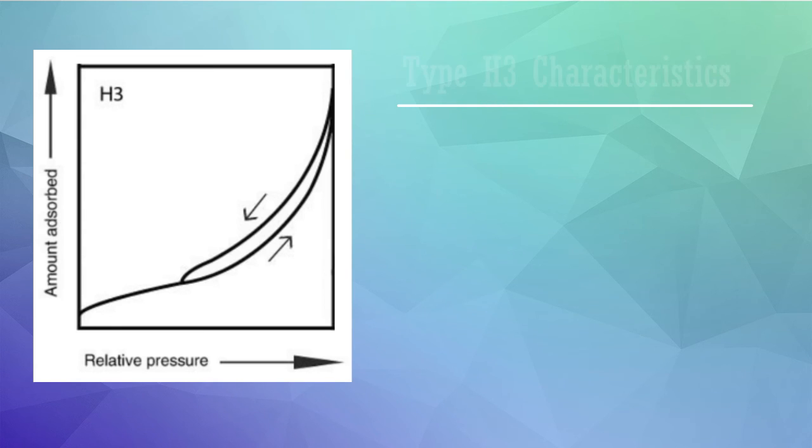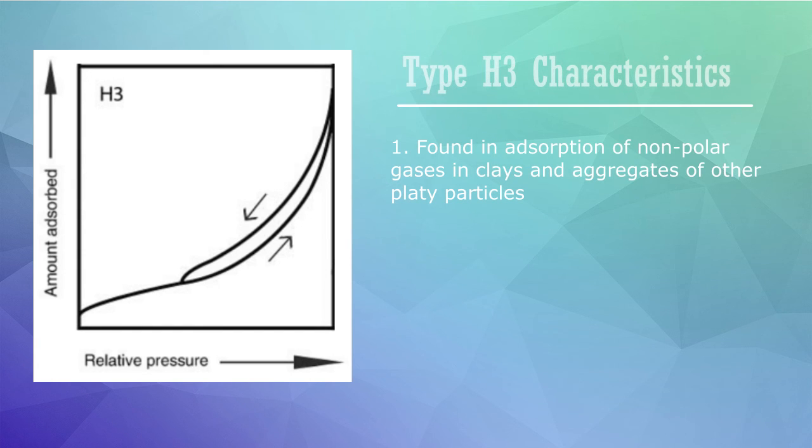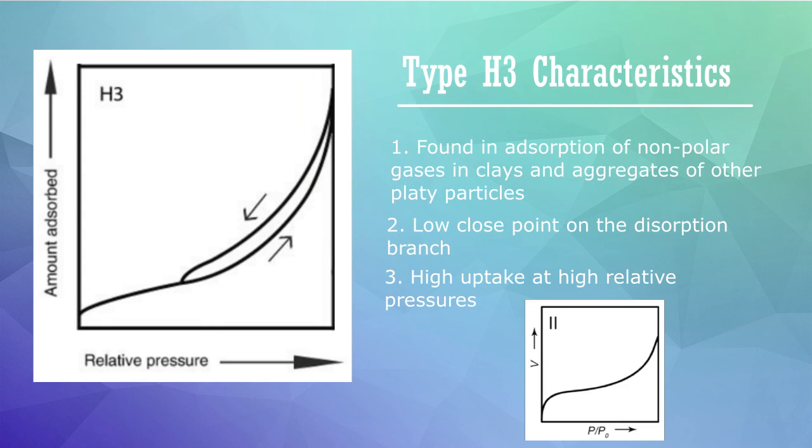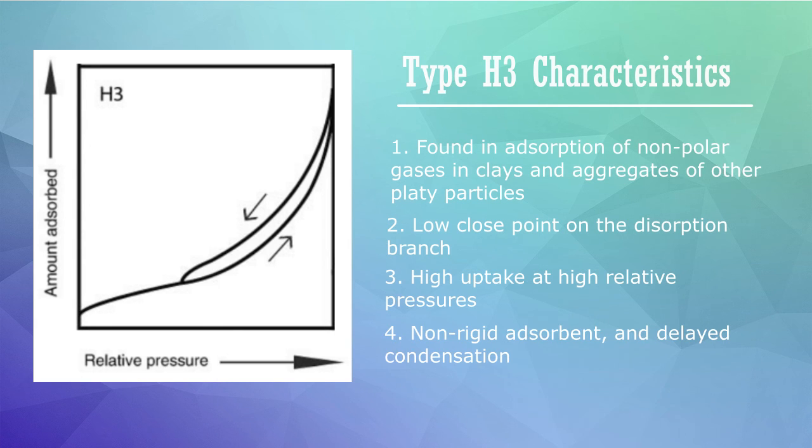Type H3 hysteresis loops is usually found in the sorption of non-polar gases in clays and aggregates of other platy particles. Its two main features is the low closure point on the desorption branch and the sharp uptake at high relative pressures. Overall, it is similar to the type 2 adsorption isotherm, with a deviation attributed to the non-rigidity of the adsorbent, as well as the delayed condensation.